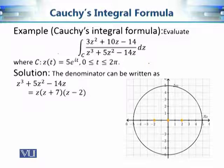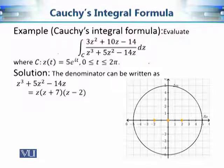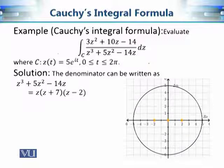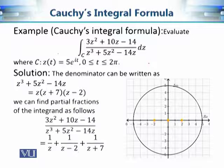The denominator is a cubic function with roots 0, minus 7, and 2. So the rational function has a denominator that is a product of three linear factors. To simplify such functions, we use partial fractions. By applying that method, we can write down this integral as a sum of three simpler contour integrals.